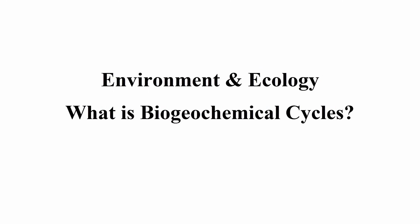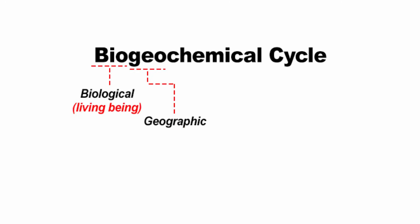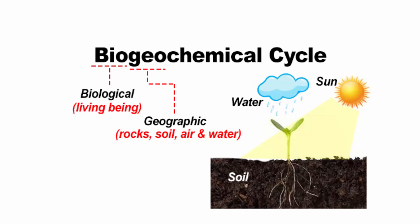The next topic is Biogeochemical Cycles. At first when you look at this term 'Biogeochemical,' it sounds very hi-fi and fancy. But if you break the word, it is nothing but the chemical exchange between living organisms and the geographic elements of the earth such as rocks, soil, air and water. In simple terms, it is a cycle that shows us the movement of chemical elements between biotic and abiotic components of the environment.